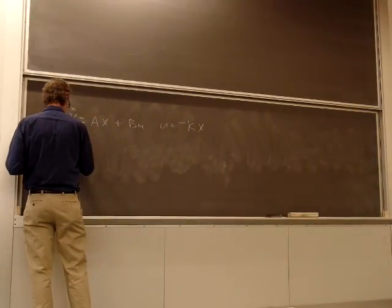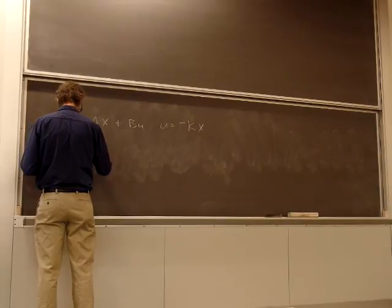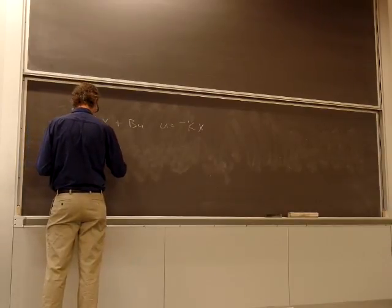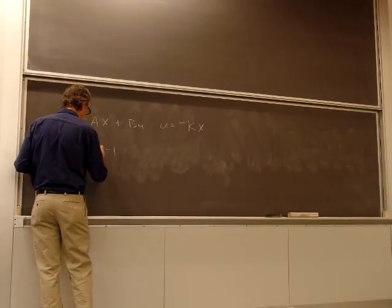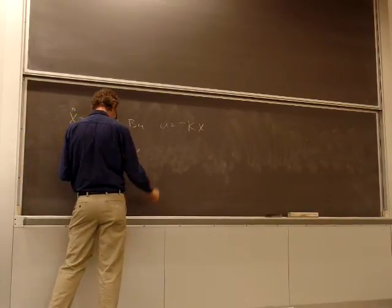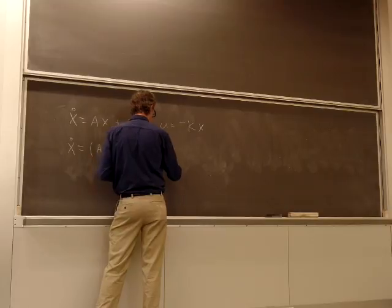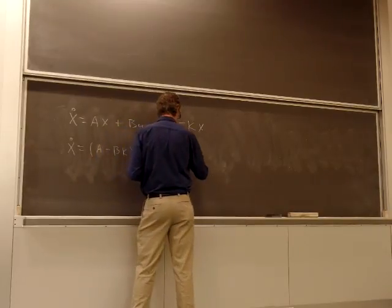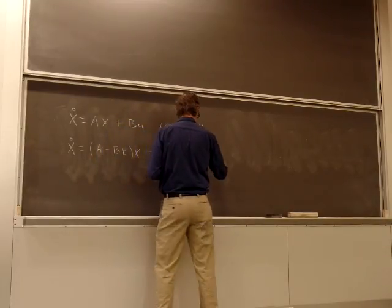So our closed loop state equation, put that in, it's x dot equals A minus BK times x. And this is the closed loop state equation.